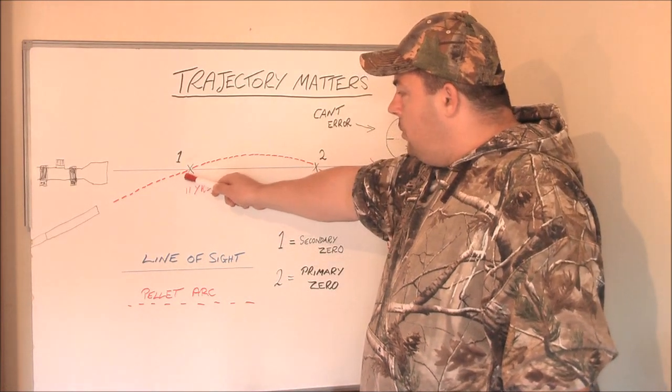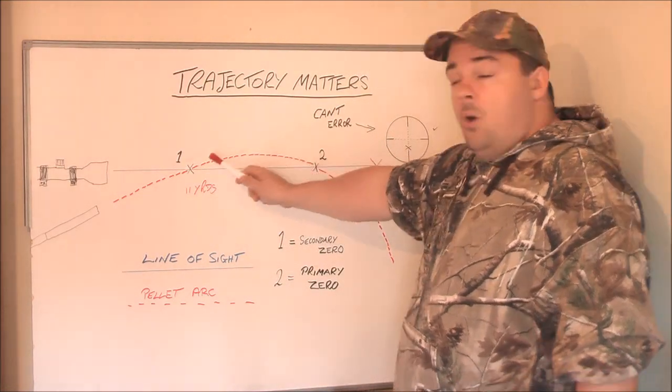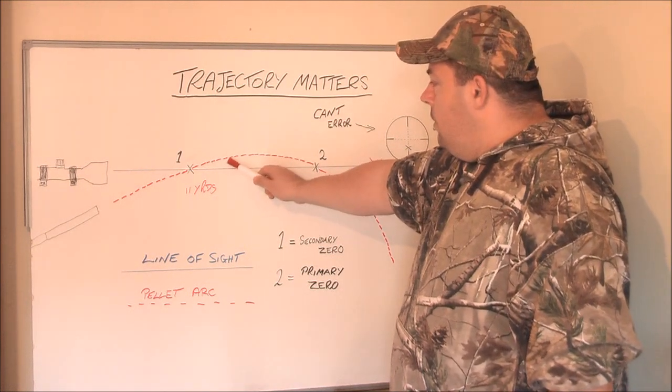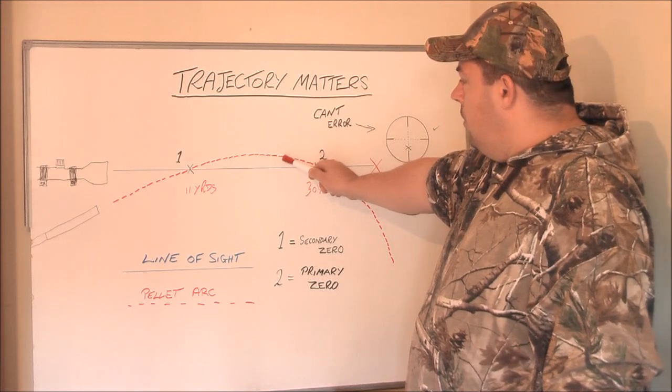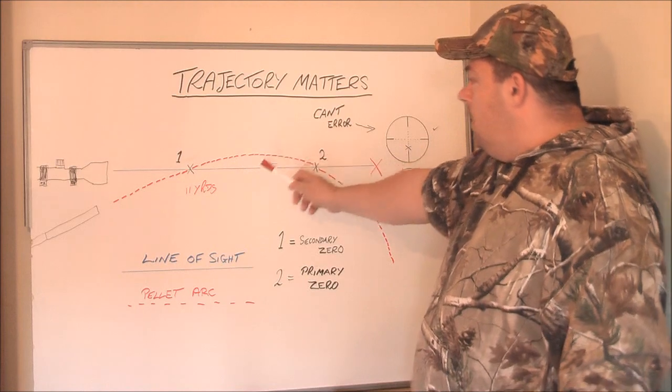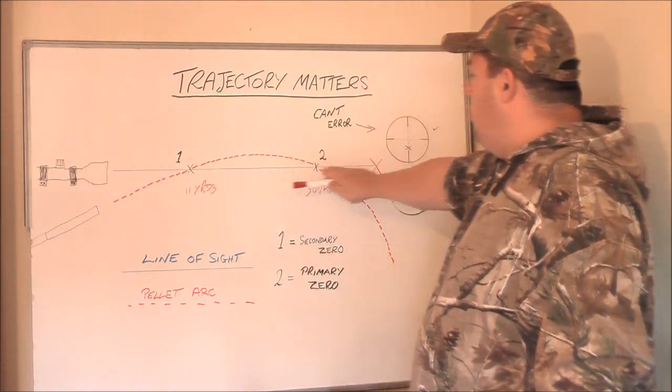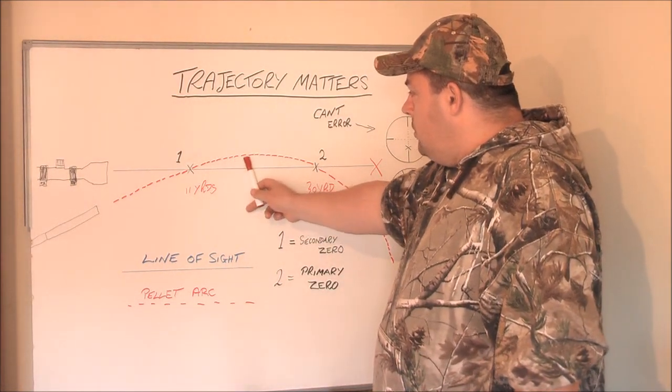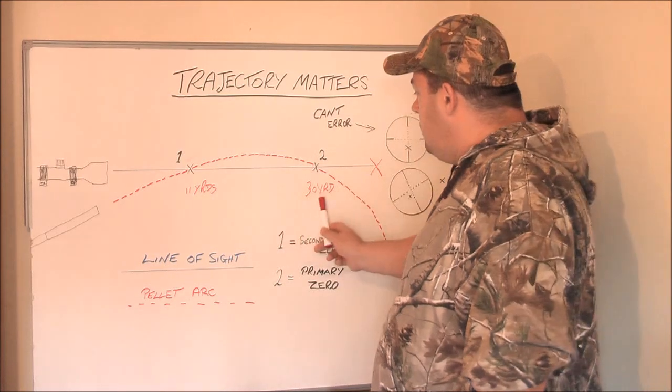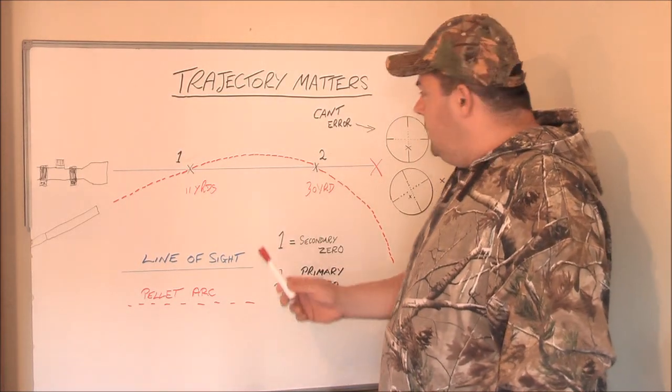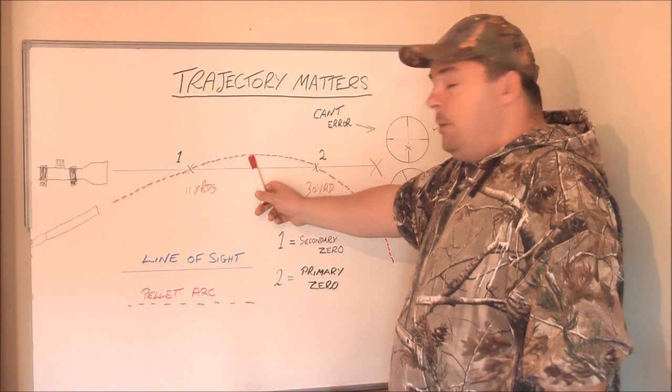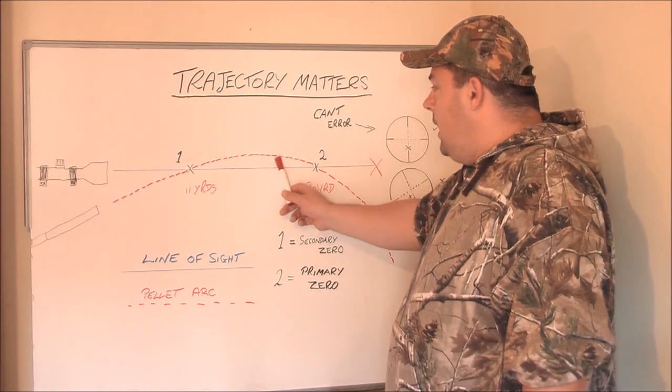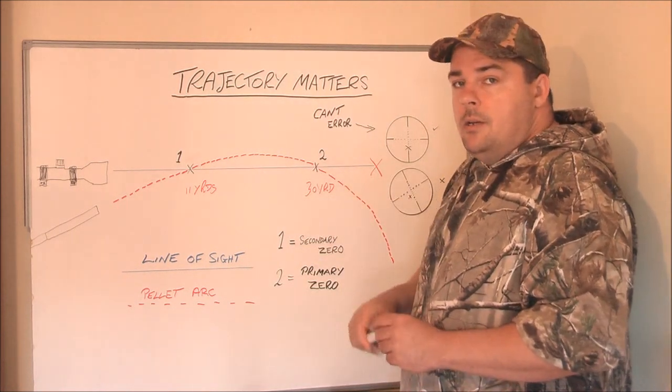So lets go back to where we were. The pellet will go up through your secondary zero point. And then for a portion of the trajectory of the arc of the pellet, the pellet will go above the blue line, which is your line of sight. So this line, this blue line here will represent the centre of your scope crosshair.